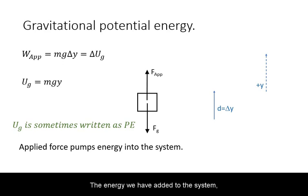The energy we have added to the system through the applied force is referred to as the gravitational potential energy. The symbol used in many physics textbooks is U sub G but in many others just designated as PE.